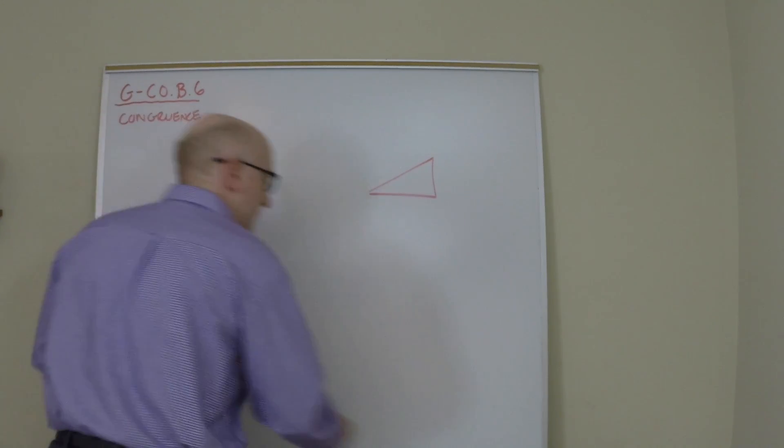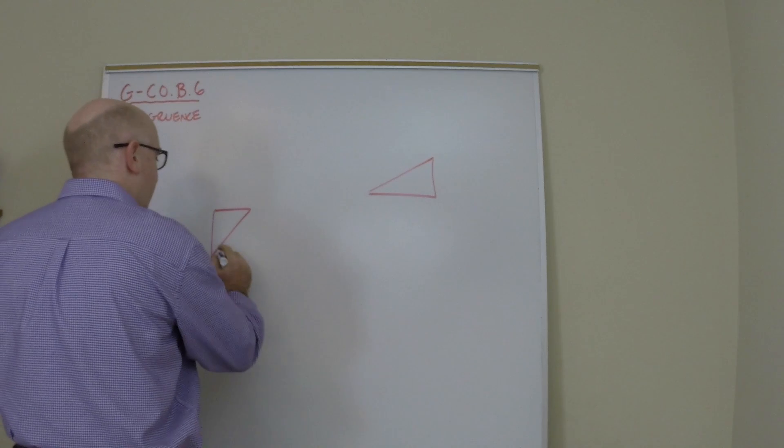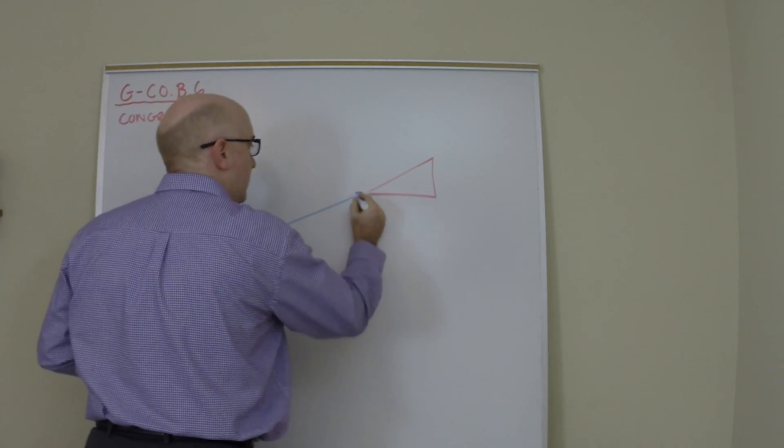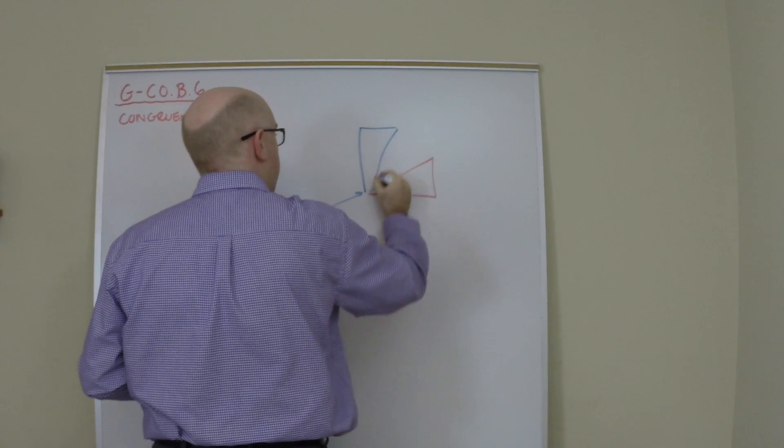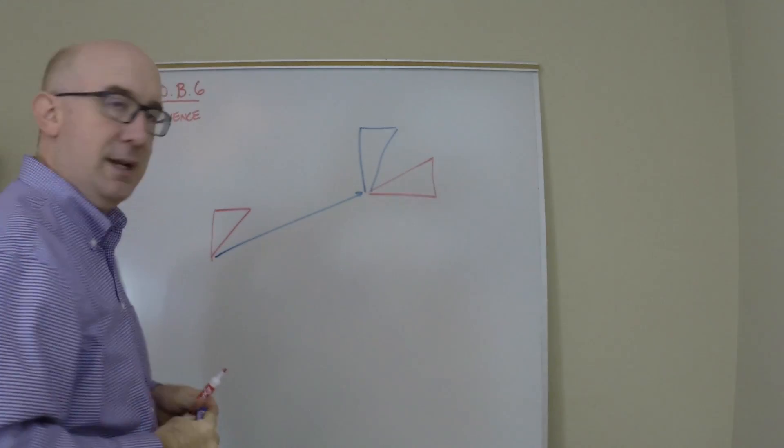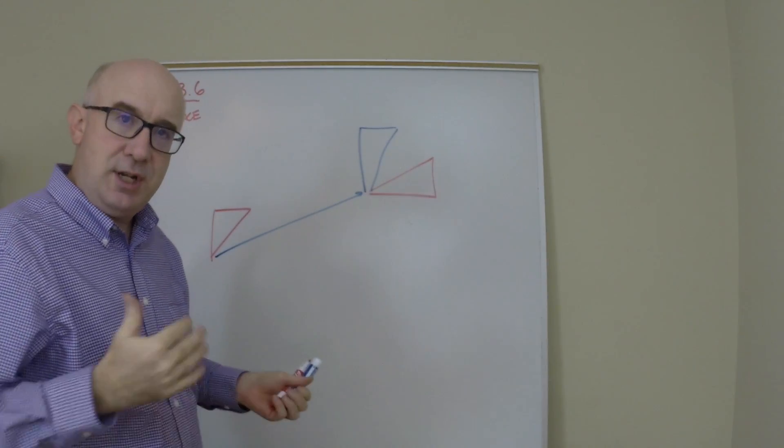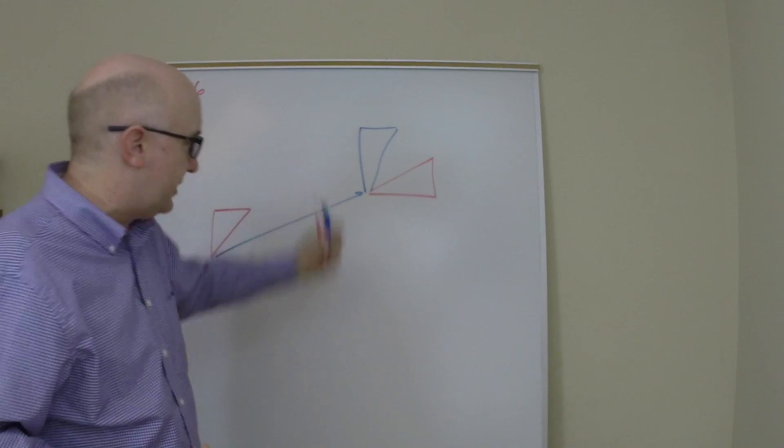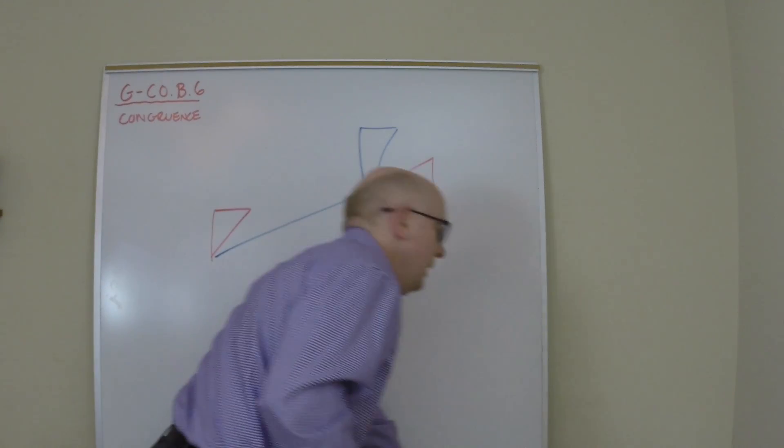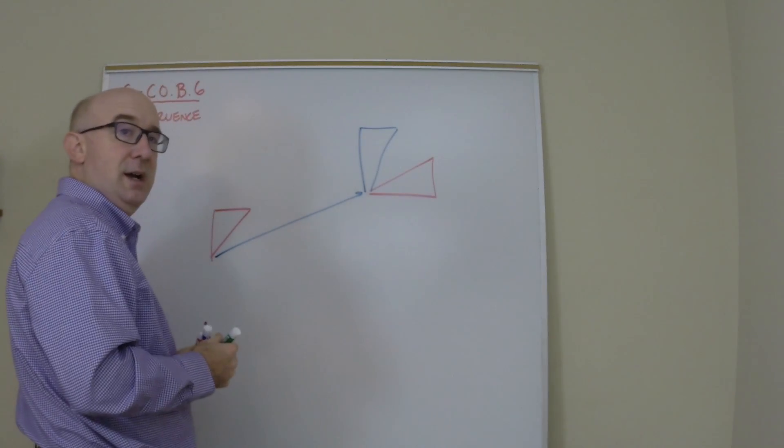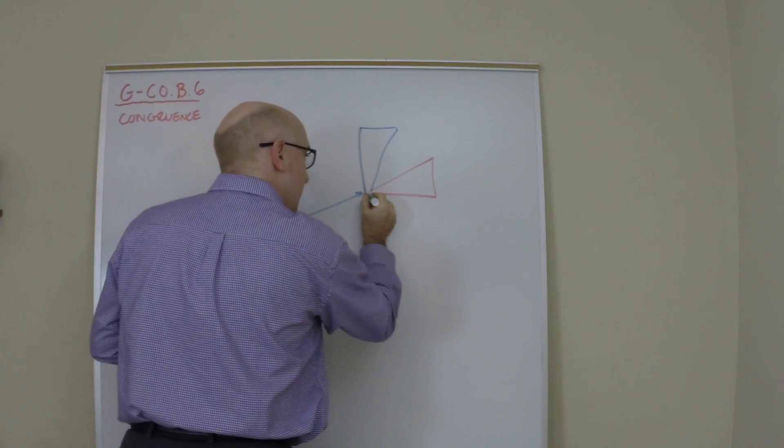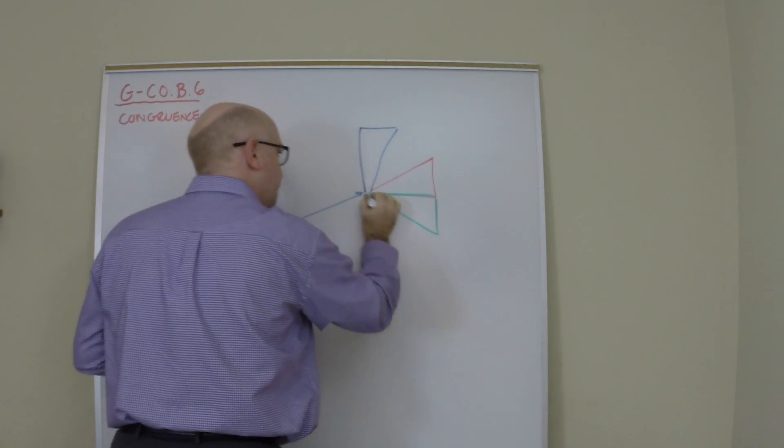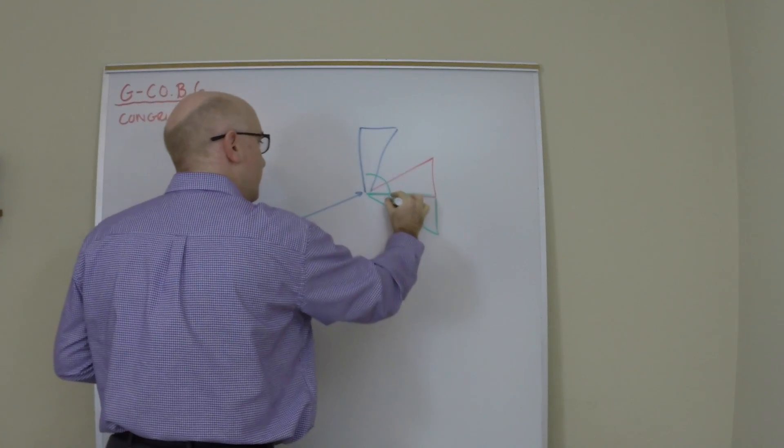So maybe I first translate it to this location. So now it looks like this. And then I realize that maybe I need to continue the motion. So translation is isometric. And then maybe I rotate it negative 90 degrees coming this way. And then maybe it lands right here by that rotation.